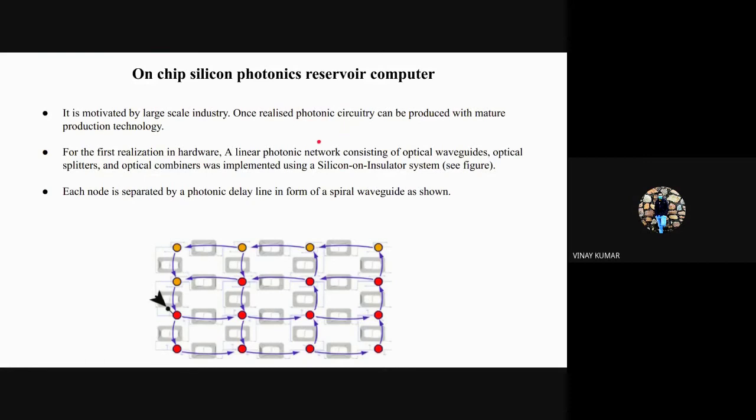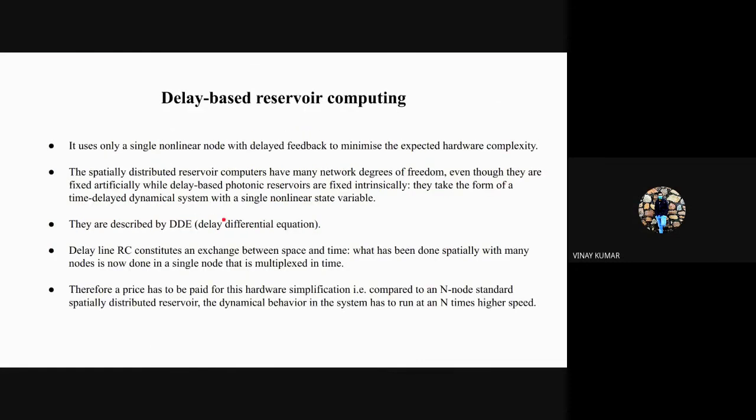The first realization in hardware came when a linear photonic network which consists of optical waveguides, optical splitters and optical combiners were implemented using a silicon-on-insulator system. In this figure, network nodes are indicated in colored dots and blue dots indicate the topology of the network. We can have different topologies for spatially distributed reservoir computing.